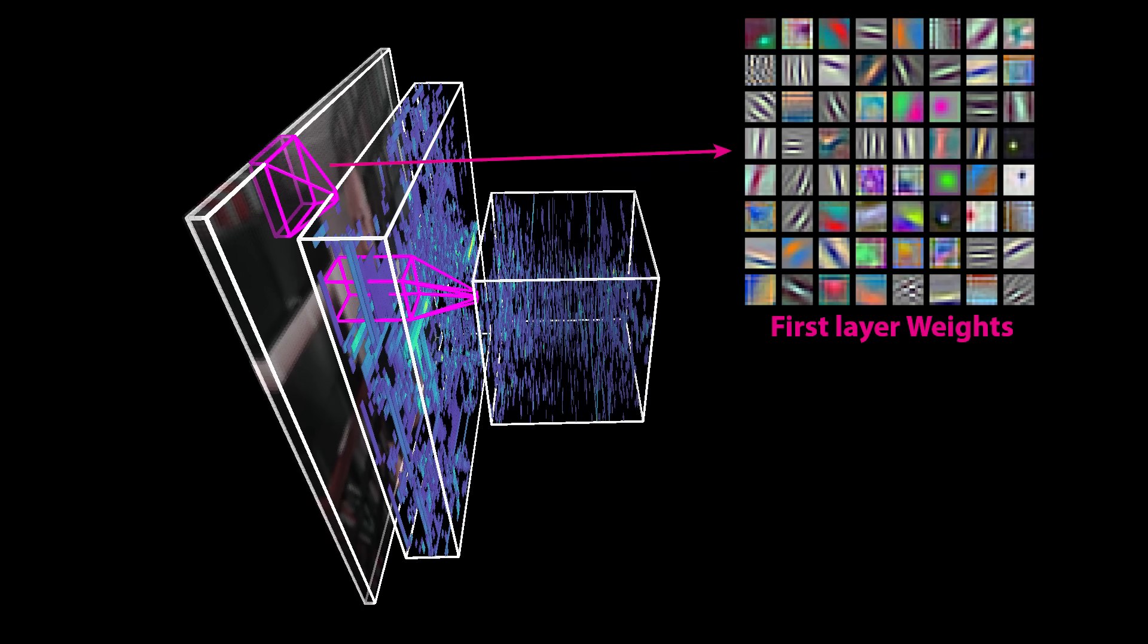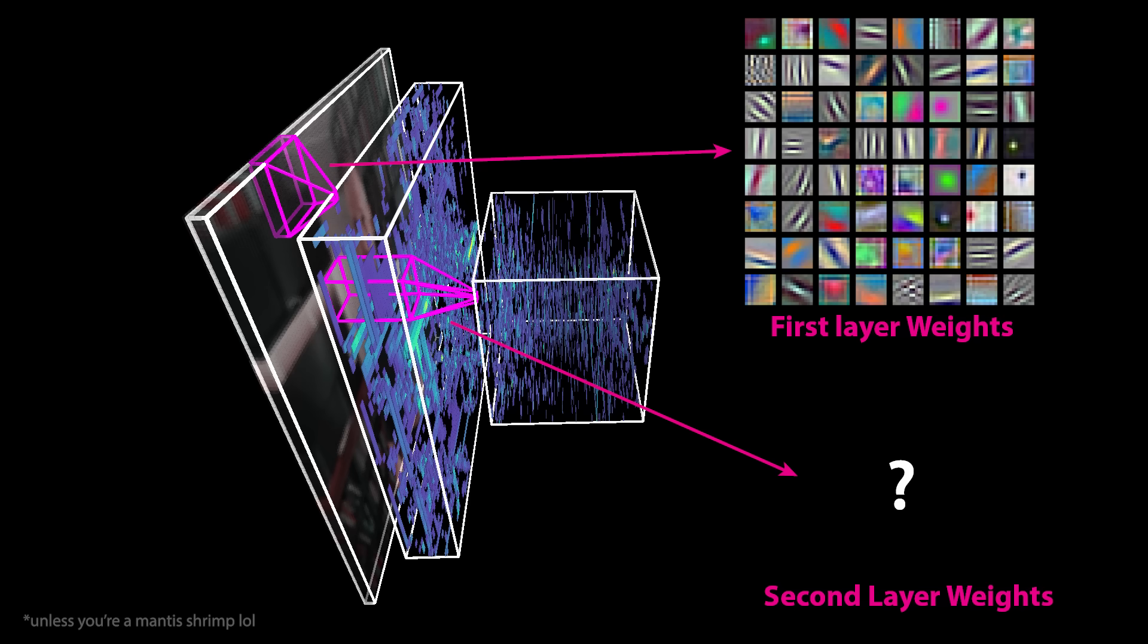We can make our activations easier to see by removing the values close to zero. Unfortunately, in our second layer, we can't learn much by simply visualizing the weight values in the kernels themselves. The first issue is that we just can't see enough colors. The depth of the kernel has to match the depth of the incoming data. In the first layer of AlexNet, the depth of the incoming data is just three, because the model takes in color images with red, green, and blue color channels.